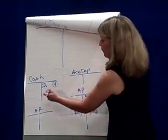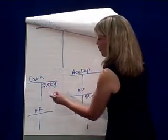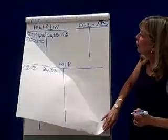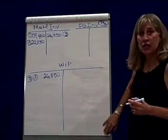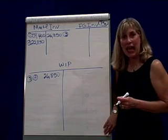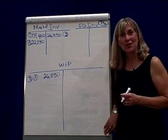So on the 4th, debit material inventory, credit cash for the purchase of indirect materials. Let's go to the next.